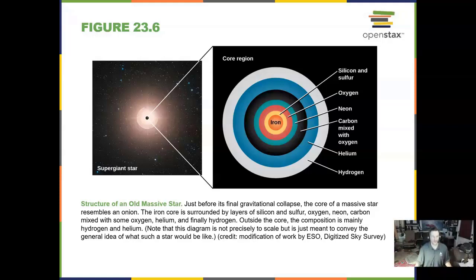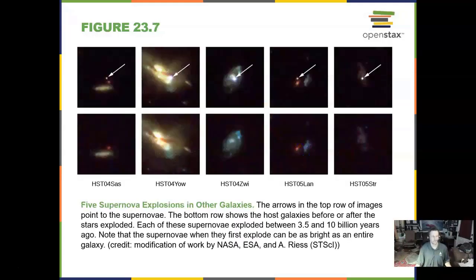And at the end, iron does not fuse, and the star explodes into a supernova. Here are some supernovae in other galaxies, and you can see the galaxy being so far away, millions of light years, but yet we see one single star lighting up brighter than the entire galaxy.